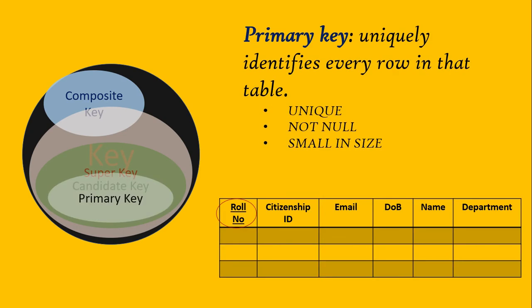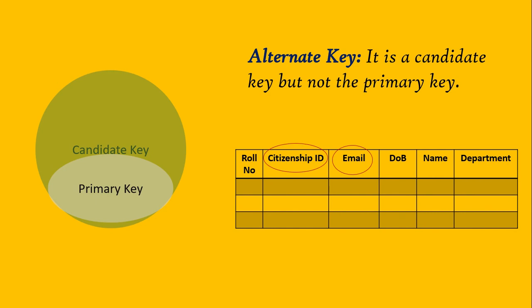Next comes primary key. A primary key is nothing but a designation — when we have too many candidate keys, we choose one per table to use as the primary key. It must satisfy certain properties: it must be unique, it must not be null in any case, and it should be of a small, measurable size that is easy for database users to handle. In this table, roll number can be used as the primary key, and we usually underline the primary key in diagrams.